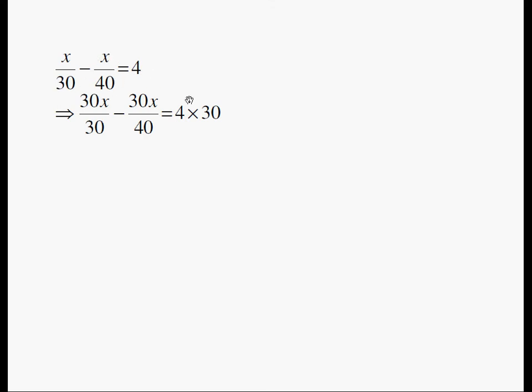Now let's simplify our equation. Well, this 30 and this 30, they cancel each other. This 0 and this 0 can be cancelled. I get 3/4 X and 4 times 30 is 120.